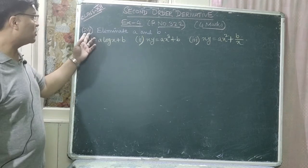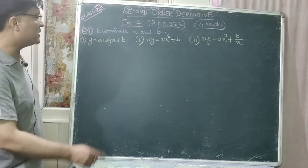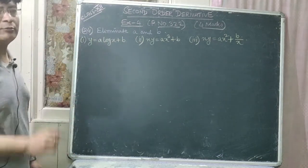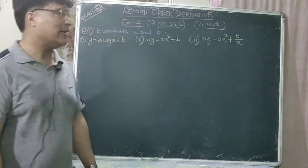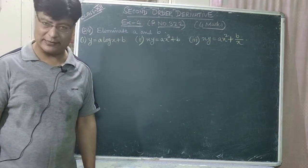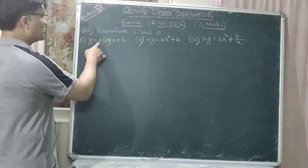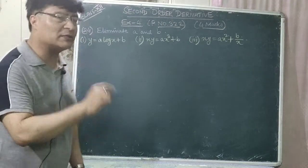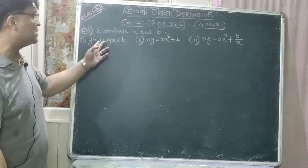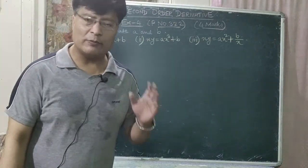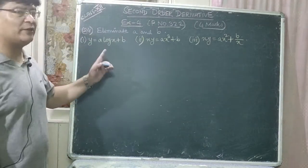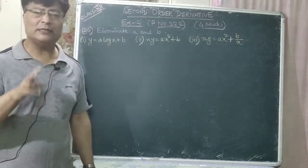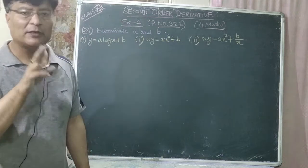Question number 24: eliminate a and b. From the first problem, y = a·log(x) + b. From number two also, eliminate a and b. From number three also, eliminate a and b from xy = ax² + b/x. Since there are two constants a and b, you have to form the differential equation eliminating both.